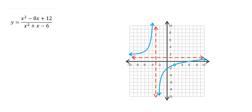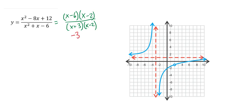Domain restrictions come from excluded values. If I want to know what the domain is, I can factor my rational expression and I know my domain is restricted by whatever the zeros of the denominator are. Negative 3 and 2 are excluded from my domain. My domain is all the x's where x is not negative 3 and x is not 2.